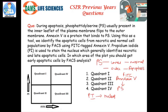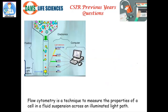Before going to the explanation, I will first explain what flow cytometry or FACS is. Flow cytometry is a technique to measure the properties of cells in a fluid suspension across an illuminated light path. In simple terms, flow cytometry has three components: fluidics, optics, and electronics.